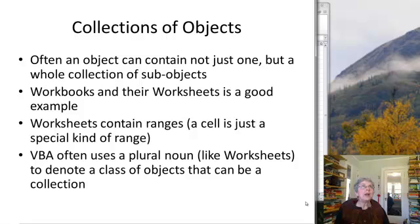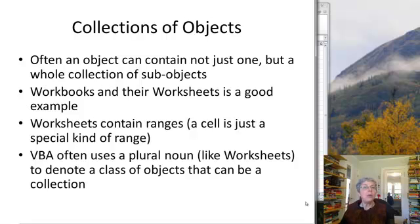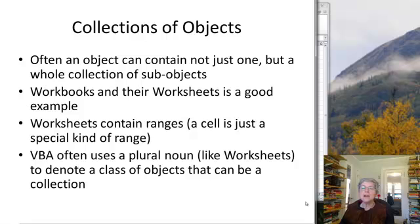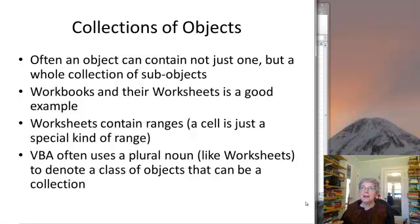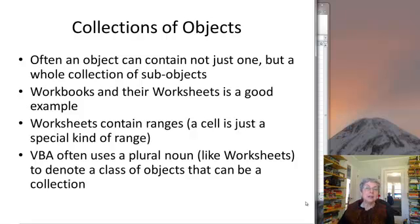Often, instead of just one object, you can have a whole collection of objects of a certain type within a given object. For example, a workbook can contain not just one worksheet but a whole bunch of worksheets — they have to have different names so you can identify them. Worksheets themselves contain many ranges, so each cell is a range and you can have collections of cells too. A lot of times we use a plural noun for a class where there can be more than one, so we're already used to seeing "cells" instead of "cell" to describe a cell.